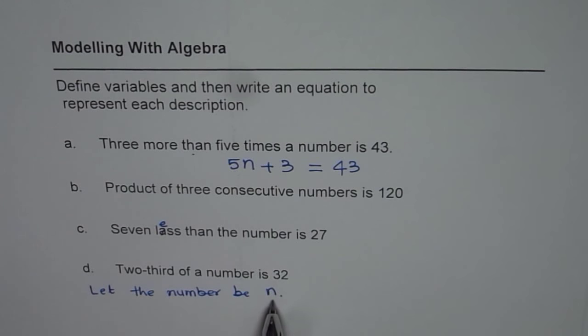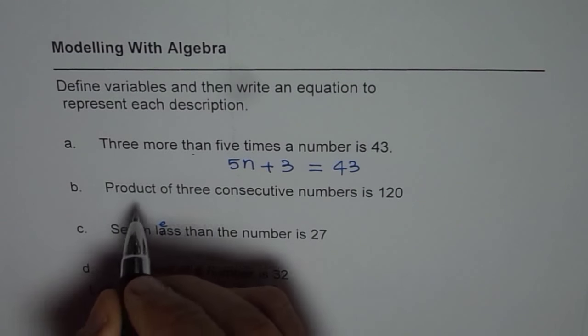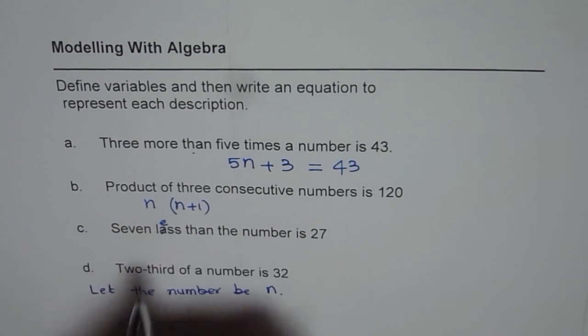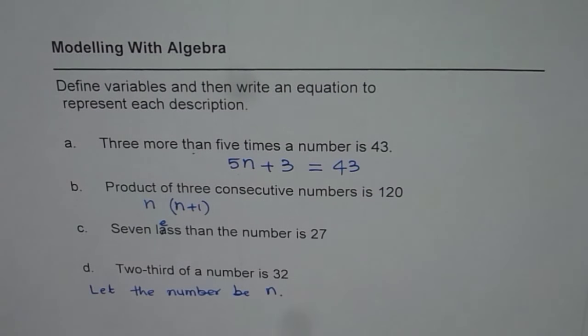If n is one number, then what is the next number? If n is one number, next number will be n plus 1. Like 3, 4, 5, the numbers which come together.